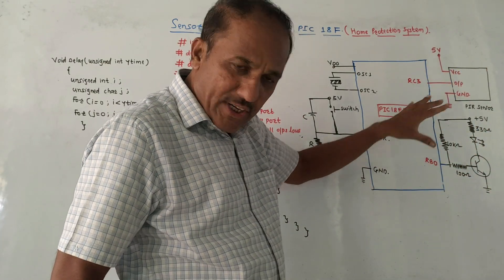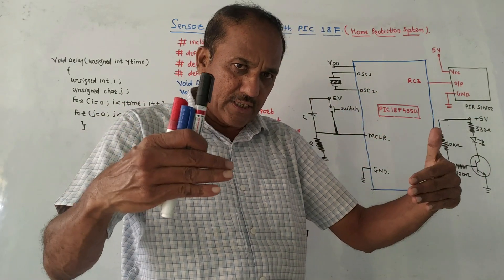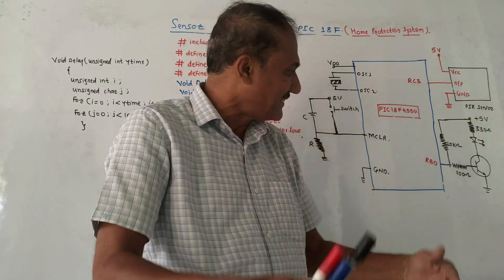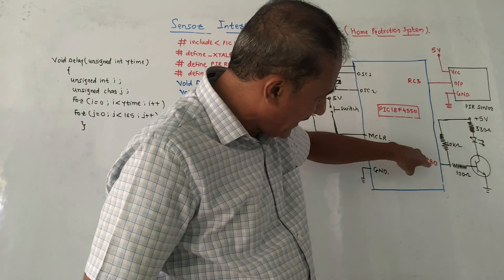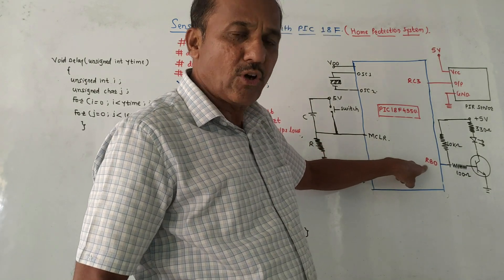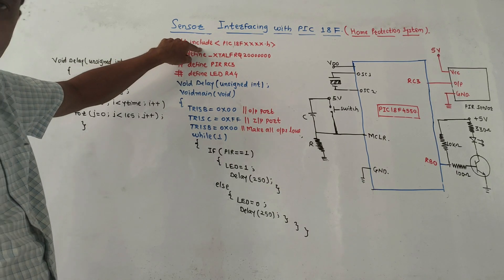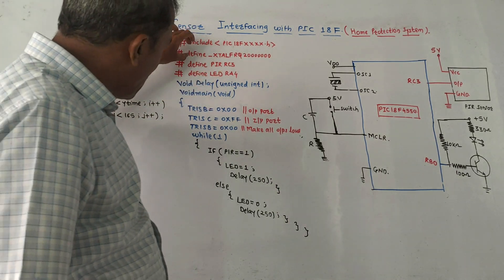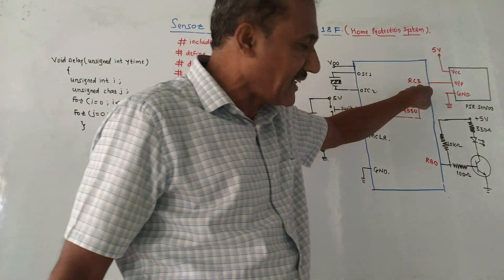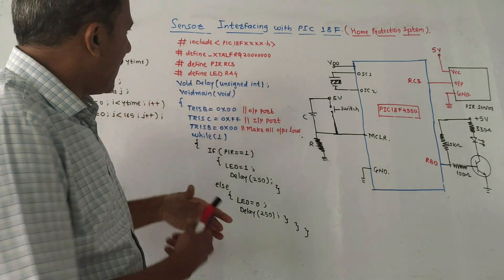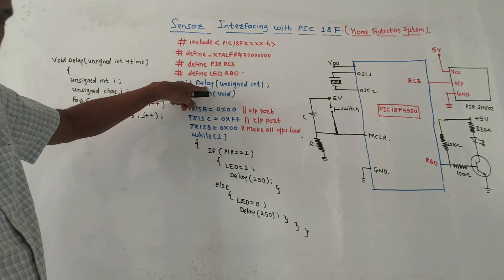Whenever there is a certain motion or an object or human being passing across the sensor, the LED should be switched on, giving the corresponding indication. The LED is connected to pin RB0, so pin RB0 is acting as output. First, we include the corresponding header file. Then we define the crystal oscillator frequency. We define PIR as RC3 because it is connected to RC3, and define LED as RB0 because the LED is connected to RB0.